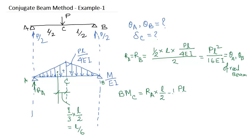That is half into PL by 4EI into L by 2 into distance of CG that is L by 6. So what is R_A? R is PL squared by 16EI, so it becomes PL cubed by 32EI.